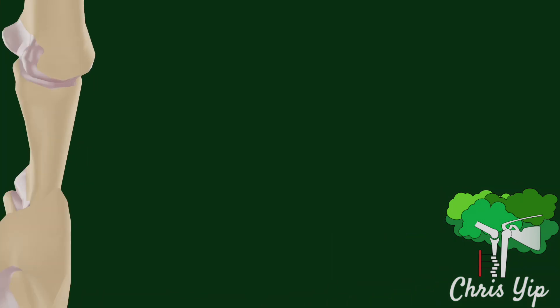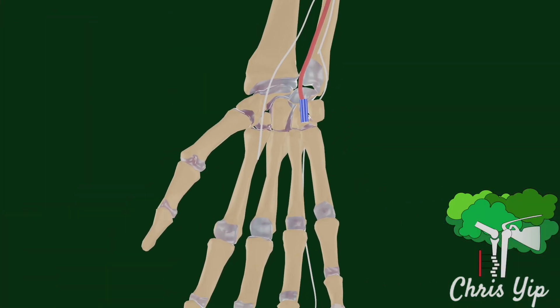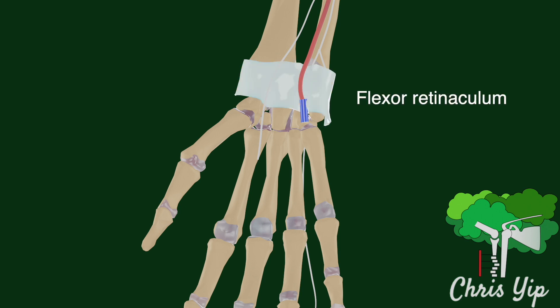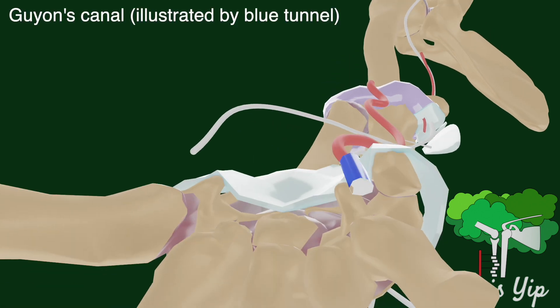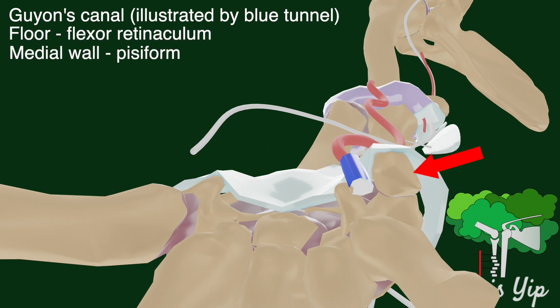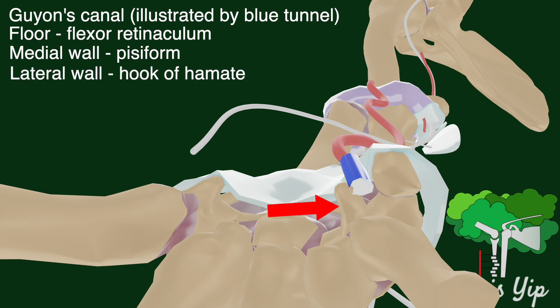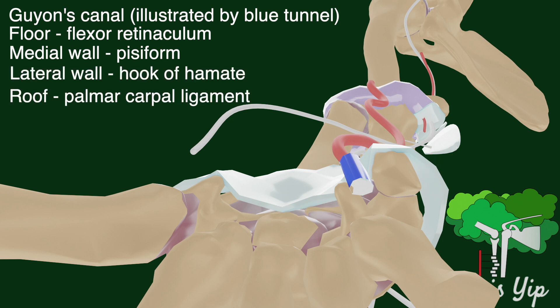Back in the main ulnar nerve, it continues to travel over the palmar side of the hand, with the ulnar artery over the flexor retinaculum. Here, both the artery and the nerve travel through a structure called Guyon's canal. This canal is formed by many structures: the flexor retinaculum as its floor, the medial wall formed by the pisiform bone, the lateral wall formed by the hook of the hamate, and the roof formed by the palmar carpal ligament, which is not shown here.